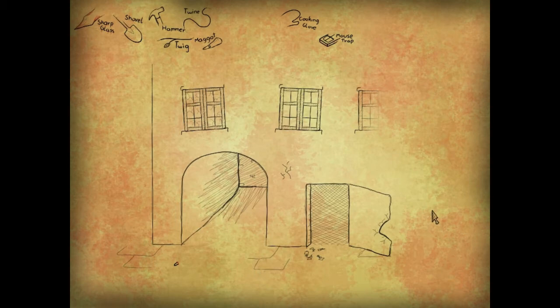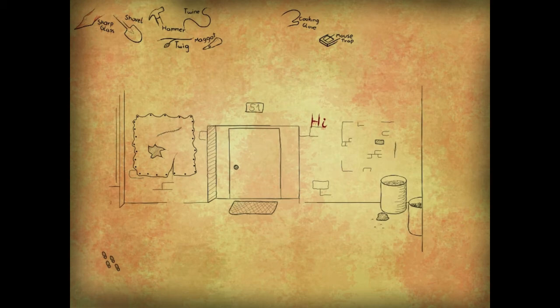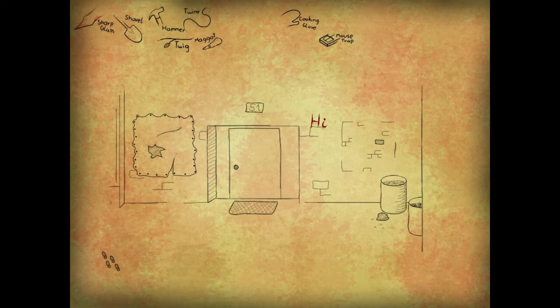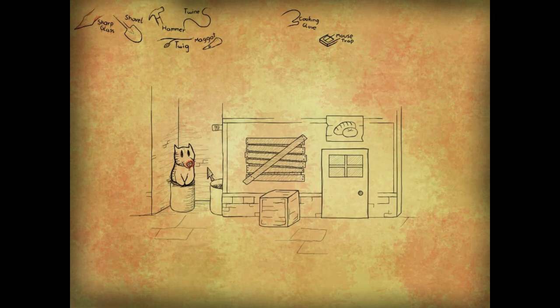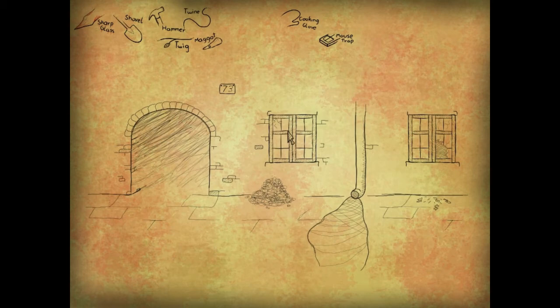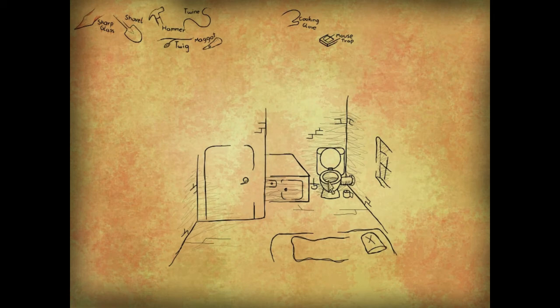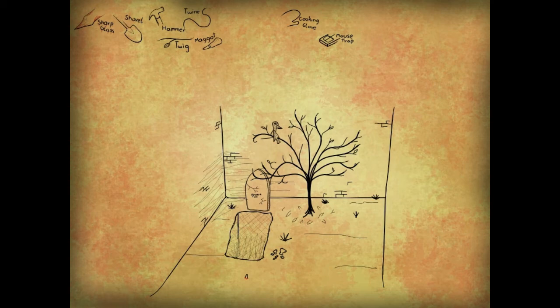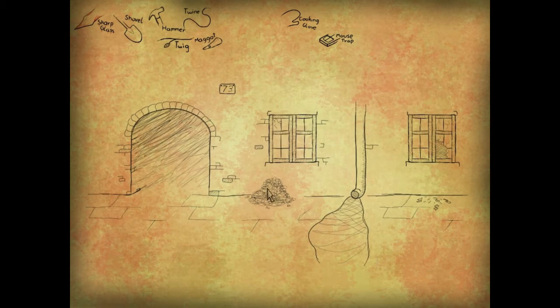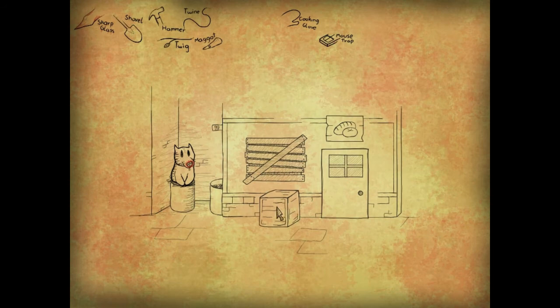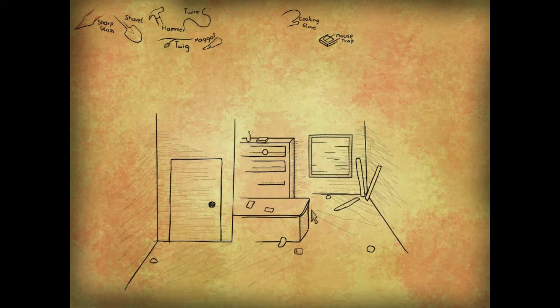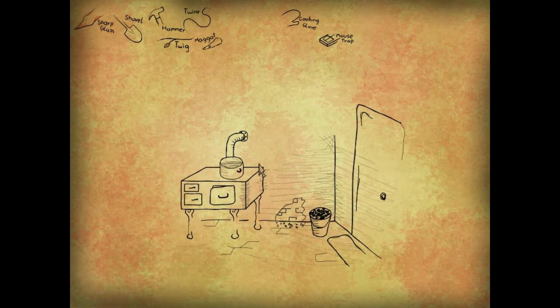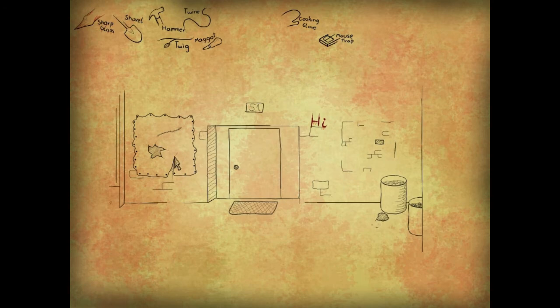Is there nothing on that side? So what else? We have a cooking glove, a mousetrap, a hammer, a twine, maggot. I can't feed the maggot to this thing. I'd like to stab him with sharp glass just cause he's an asshole and he ate my finger. Is there nothing? Nothing here, huh?